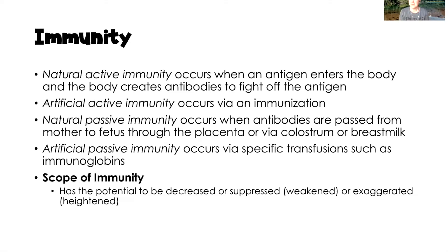Natural passive immunity occurs when antibodies are passed from mother to fetus — for example, when mom gets a flu shot and baby gets that immunity passed on through either the placenta, colostrum, or breast milk. Artificial passive immunity occurs via specific transfusions such as immunoglobulins, as seen with certain autoimmune disorders where the treatment involves IV administration of immunoglobulins.